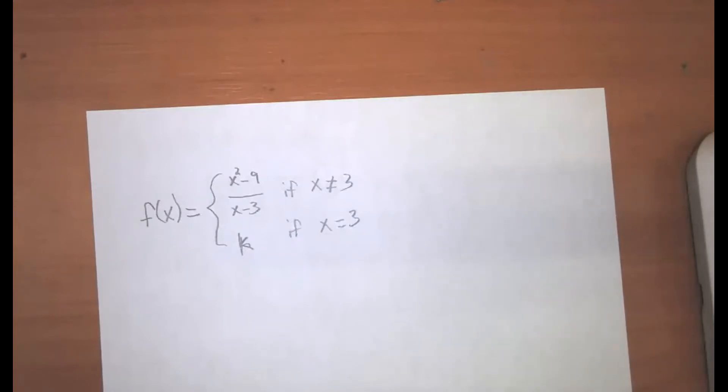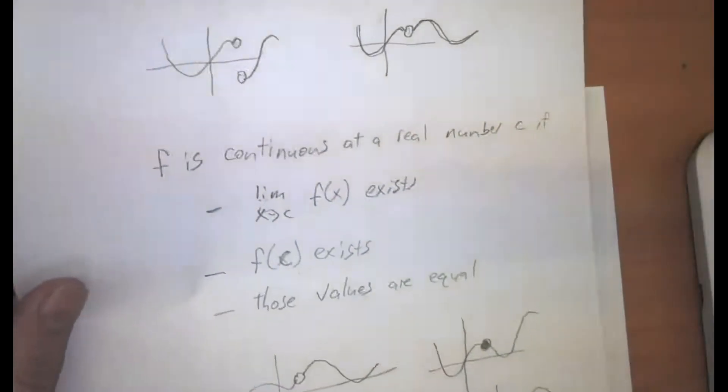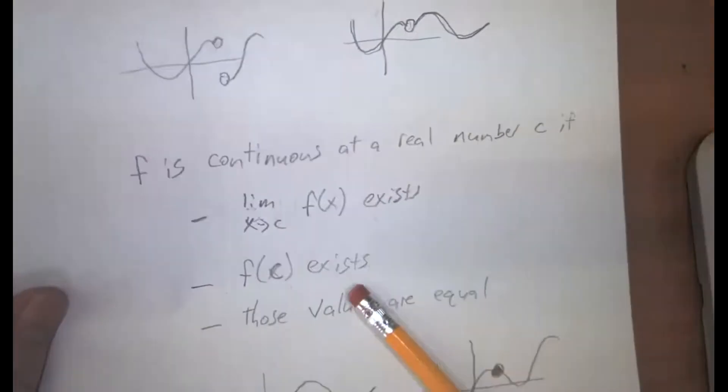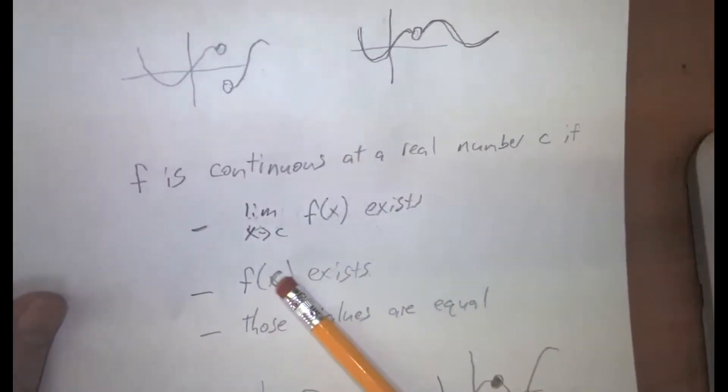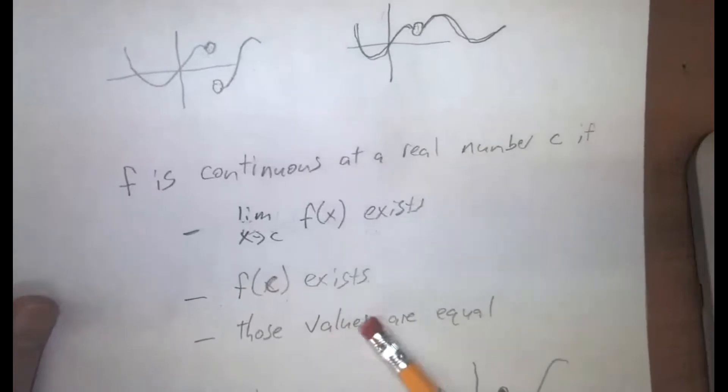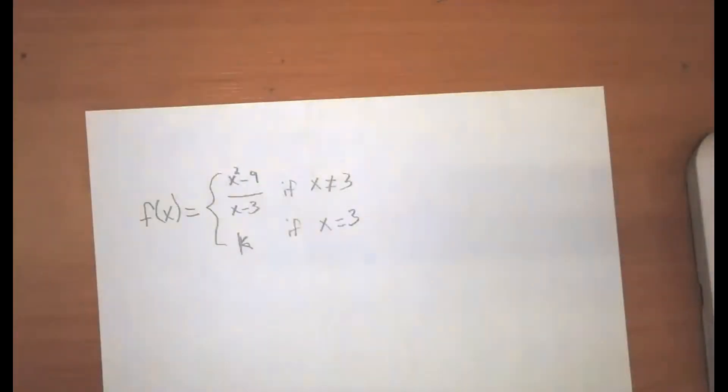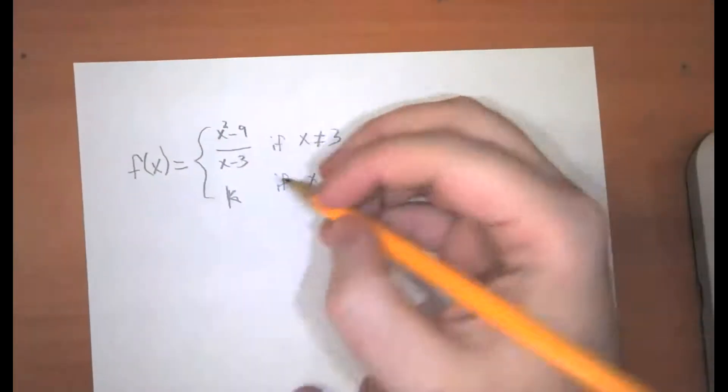All right, so let's go back and think about what our definition of continuity is. That we need to have the limit exists, the function has to be defined at 3, and those values have to be equal. All right, so let's think about it first.